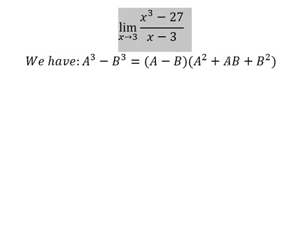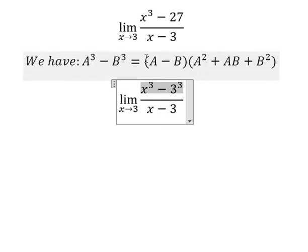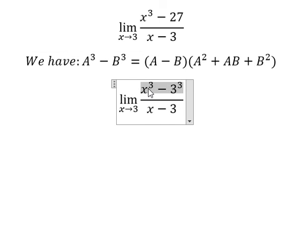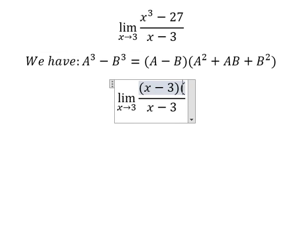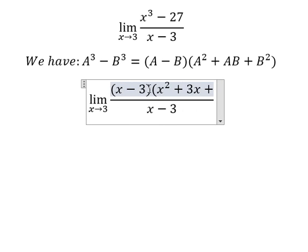So for this one, we have number 27, and that's about 3 to the power of 3, so we need to transform this expression. Now we have x minus 3 multiplied by x squared plus 3x plus 9.